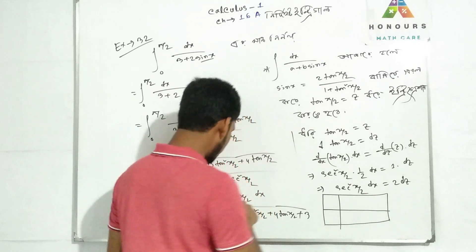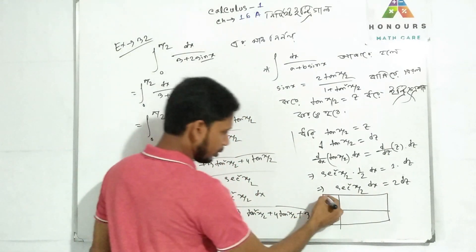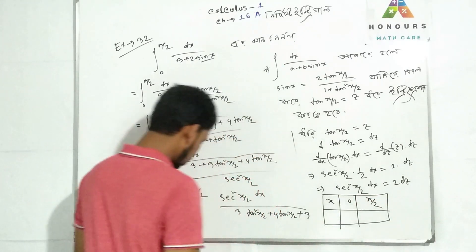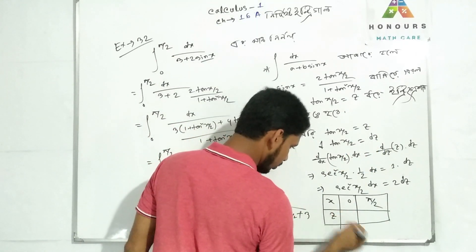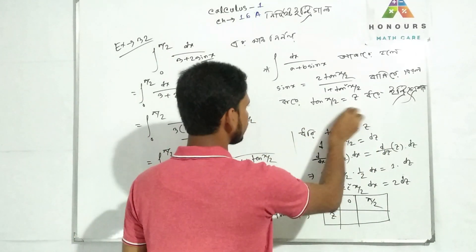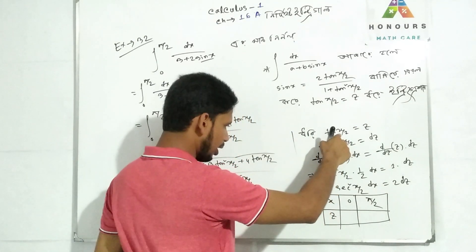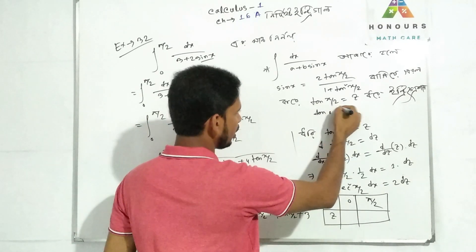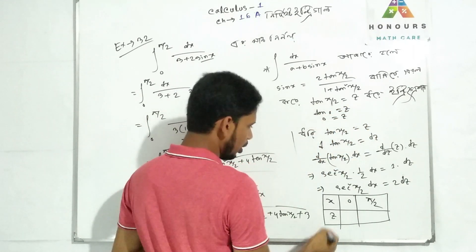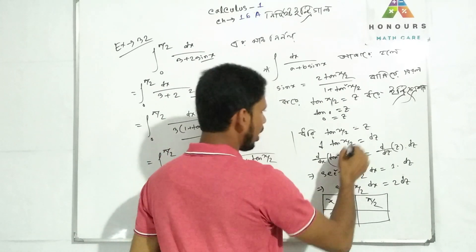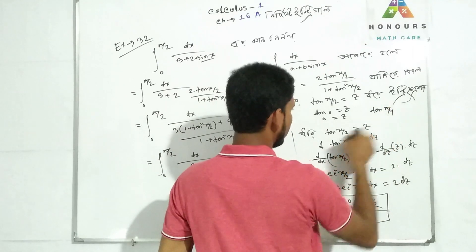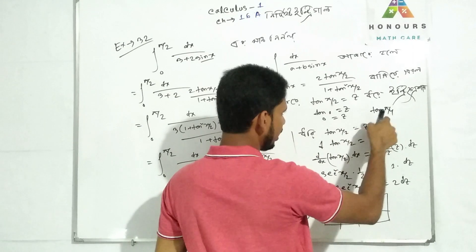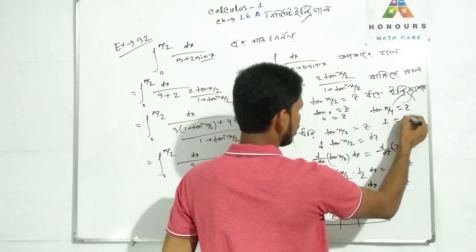The original limits were x from 0 to π/2. We now change limits to z. If x equals 0 then z equals tan(0) equals 0. If x equals π/2 then z equals tan(π/4), which gives z equals 1. So z runs from 0 to 1.